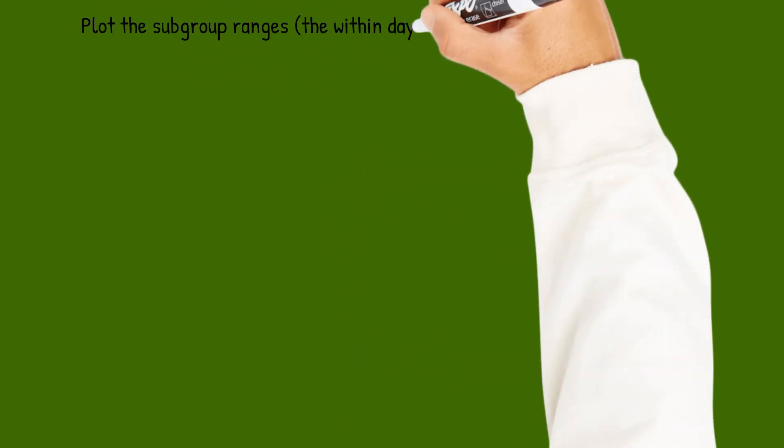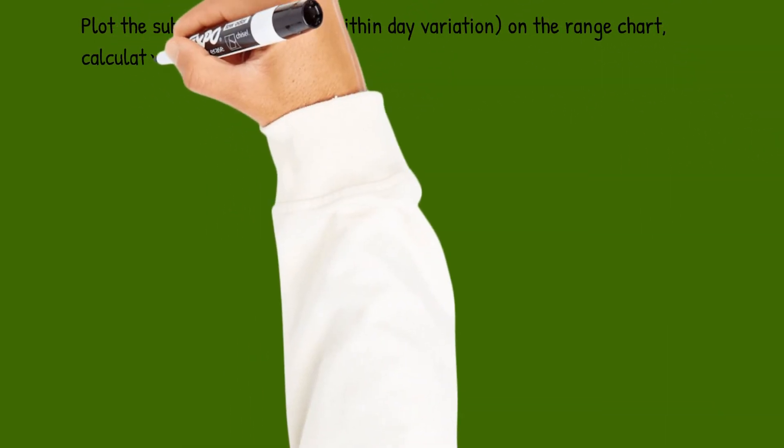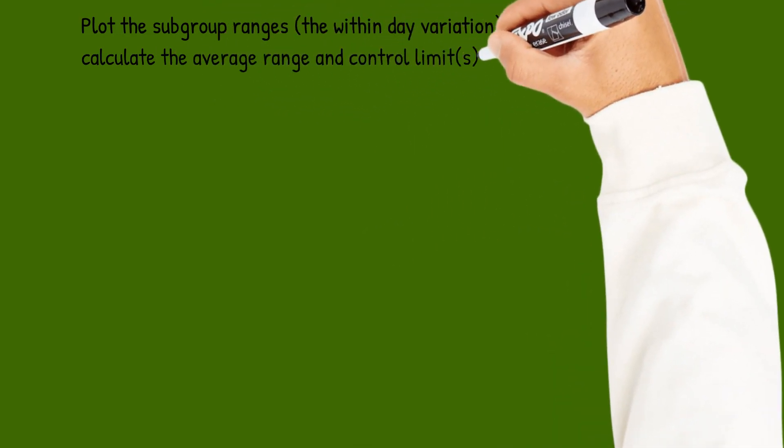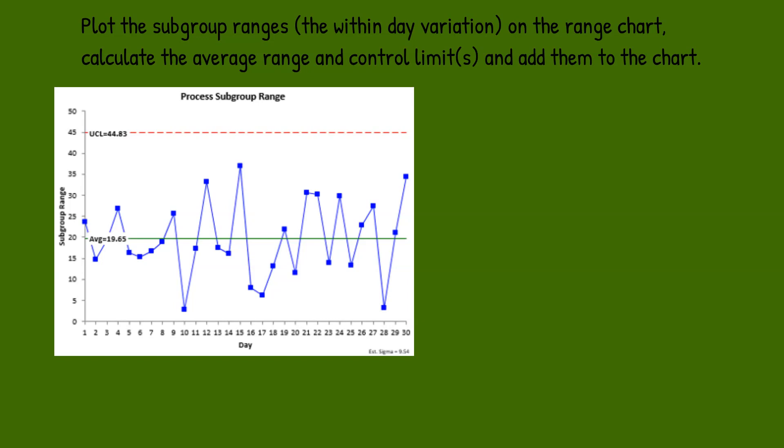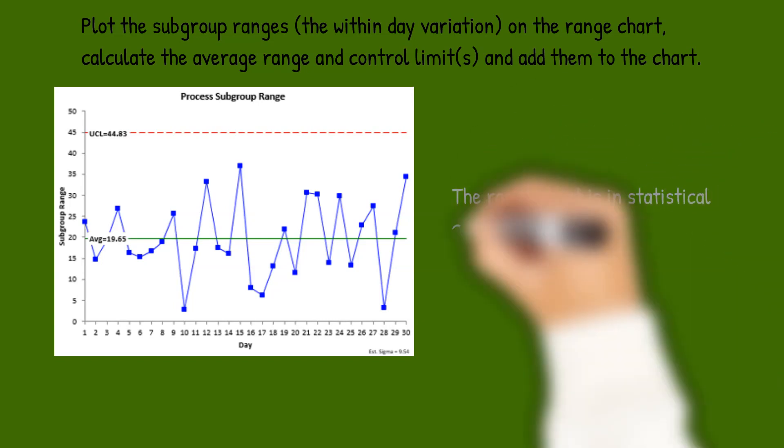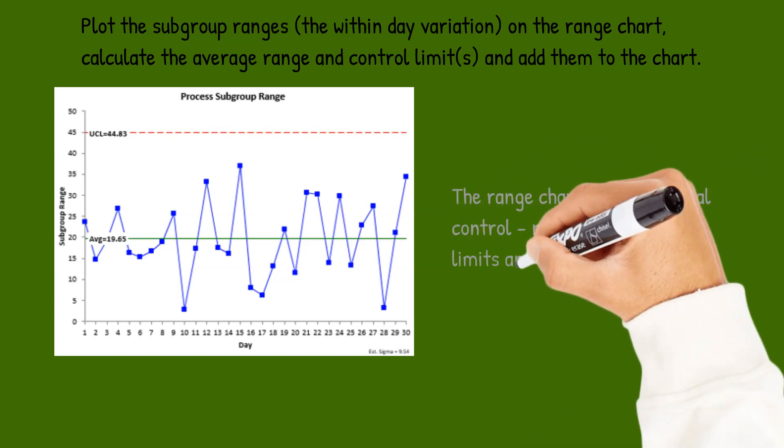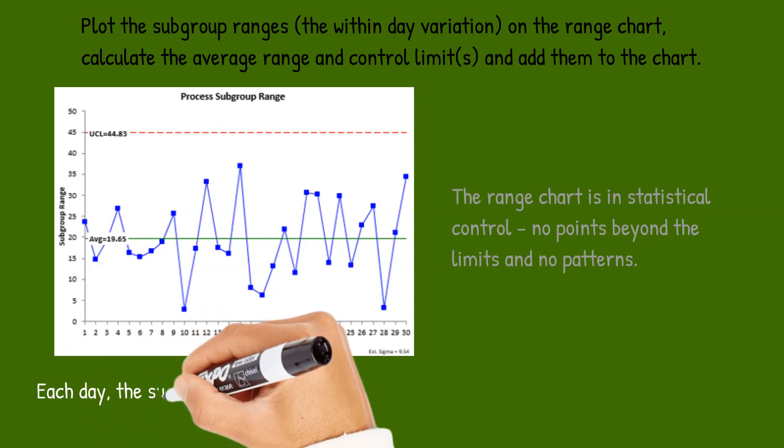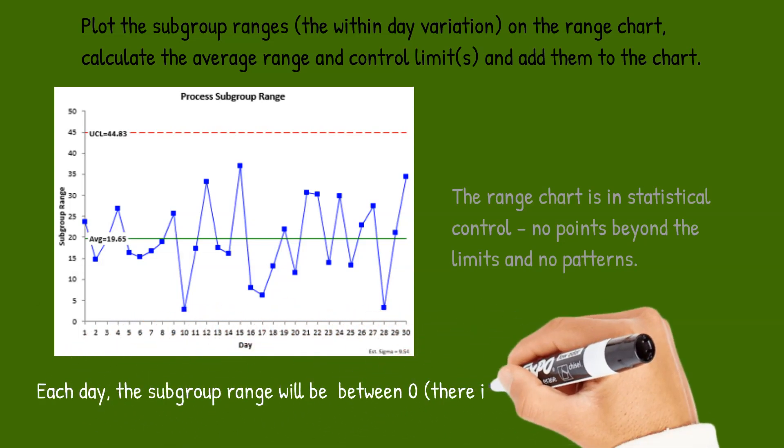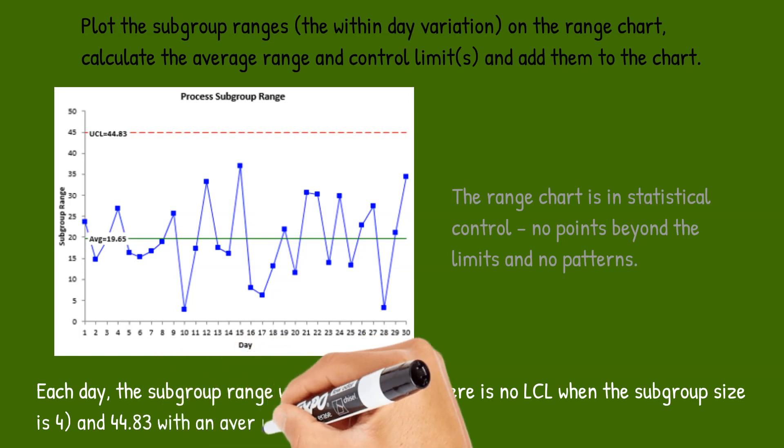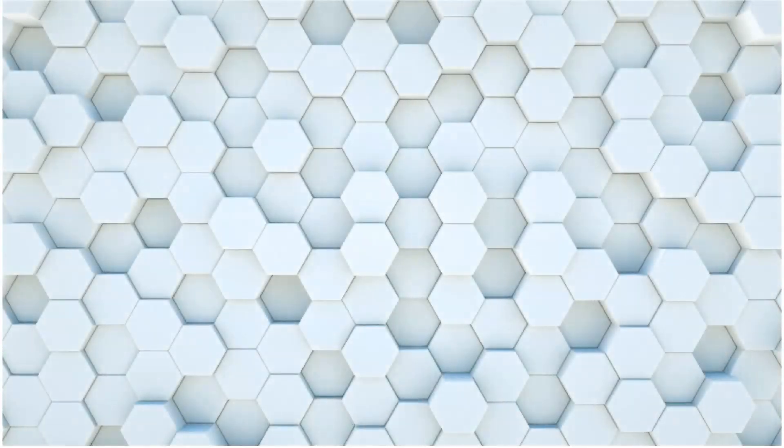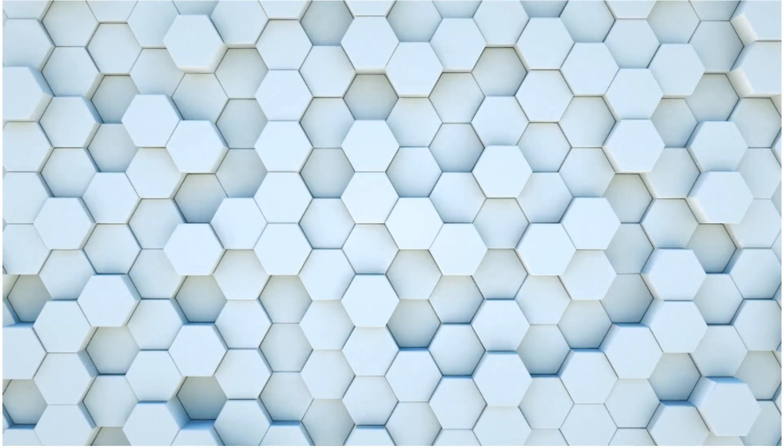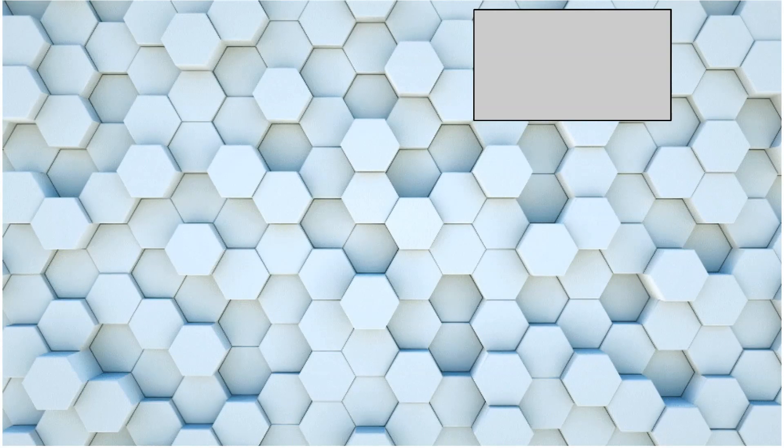Now we do the same thing with the subgroup ranges. We plot those on the range chart, calculate the average range and the control limits. Here's the range chart for our data. It's in statistical control also, no points beyond the limits and no patterns. Each day, the subgroup range will be between 0 and 44.83 with an average of 19.65 as long as the process remains the same. So our process is in statistical control.